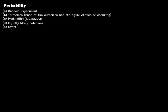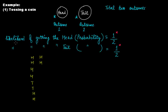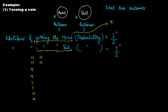The last point is about event. When we say the probability of getting head, we are focusing on getting the head — that is one event. Focusing on getting the tail is another event. So in the case of a coin, you have two events: the event of getting head, and the event of getting tail.